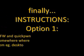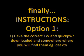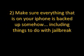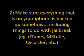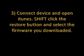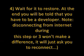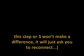Instructions for Option 1. Step 1: Have the correct firmware and QuickPwne downloaded and somewhere you will find them, e.g. the Desktop. Step 2: Make sure everything on your phone is backed up, including things to do with jailbreak, e.g. iDunno, MXTube, Pscorder, etc. Step 3: Connect device and open iTunes. Shift-click the Restore button and select the firmware you downloaded. Step 4: Wait for it to restore. At the end you will be told that you have to be a developer. Note: disconnecting from internet during this step won't make a difference — it will just ask you to reconnect.